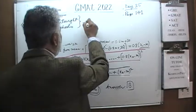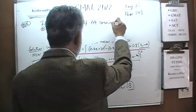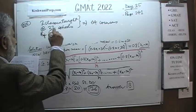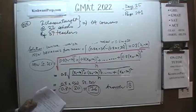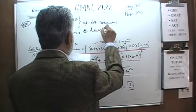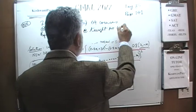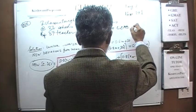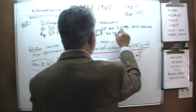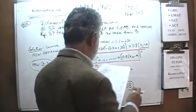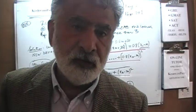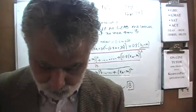That tells us that 64 courses are taught in total, by 37 teachers. We are told that each teacher will teach at least one course but no more than three. So one more time: we have 37 teachers employed at these schools, we have 64 courses to teach, and each teacher teaches at least one but no more than three courses.